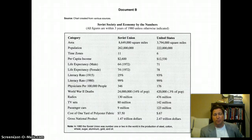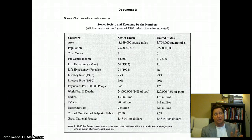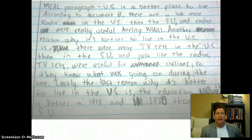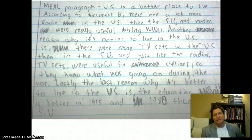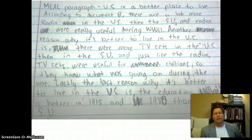So let's take a look at a couple of samples. Bear in mind, these are ninth graders, this is early in the year, and they're not very good at this yet. This student makes the mistake of just saying 'MEAL paragraph' as if that's a title: 'US is a better place to live.' I'm not sure if that's a sentence or his title — I'm thinking it was the title. Let's read through this whole thing.